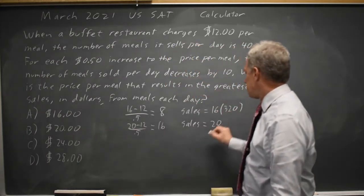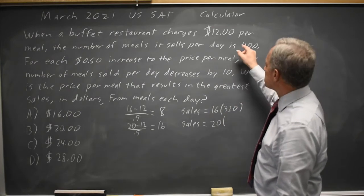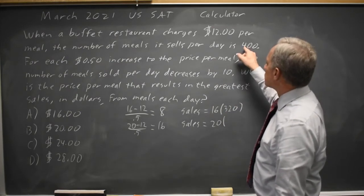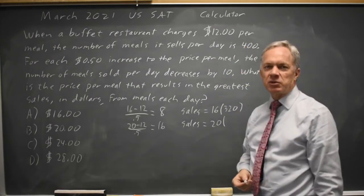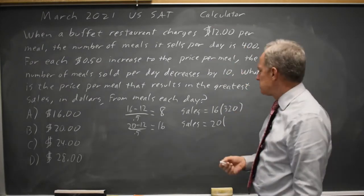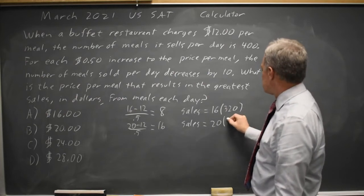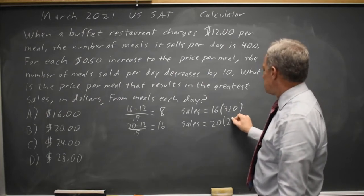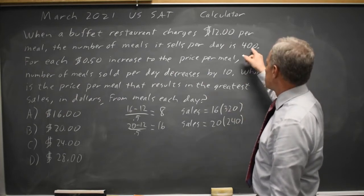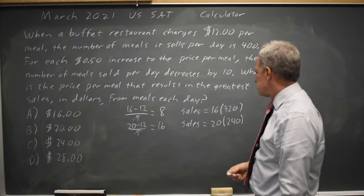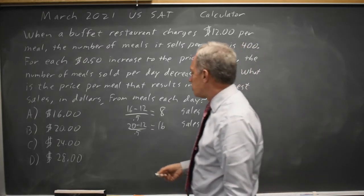So our sales is the $20 price times the number of meals, which is 400 minus 16 times 10, giving 400 minus 160, which is 240 meals.